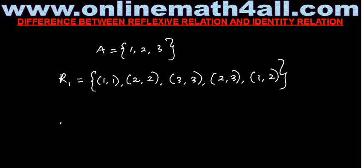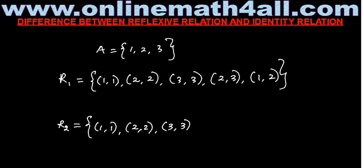I am also going to define relation R2 on the same set A. R2 is equal to {(1,1), (2,2), (3,3)}. So here we have two relations defined on set A. In R1 we have (1,1), (2,2), (3,3), and in R2 also we have (1,1), (2,2), (3,3).